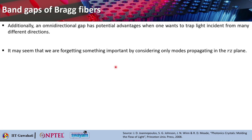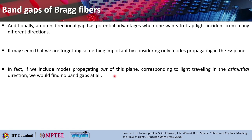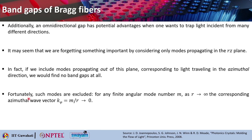Additionally, an omnidirectional gap has potential advantages when one wants to trap light incident from many different directions. It may seem that we are forgetting something important by considering only modes propagating in the Rz plane — where R is the radial vector and Z is the fiber axis. In fact, if we include the modes propagating out of this plane, corresponding to light traveling in the azimuthal direction, we will find no band gap at all. But fortunately, such modes are basically excluded for any finite angular mode number M, as when R tends to infinity, the corresponding azimuthal wave vector k_φ = M/R basically tends to 0.